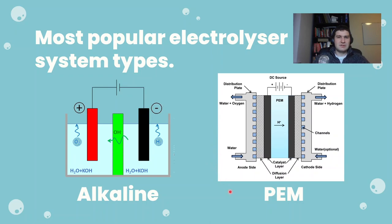PEM stands for proton exchange membrane and utilizes a membrane between the anode side and the cathode side of the cell. What happens is the water flows into the anode side of the cell, and when the electrical power is applied, the water is split into hydrogen and oxygen. The hydrogen atom consists of one proton and one electron.